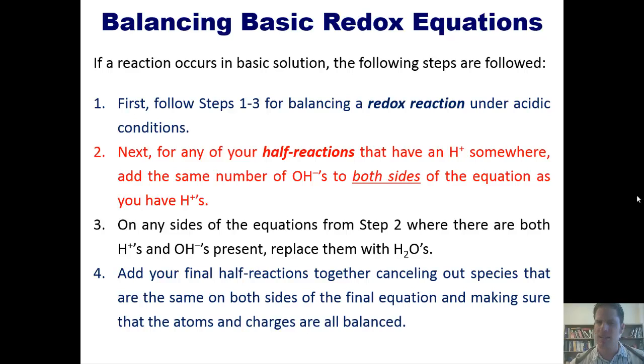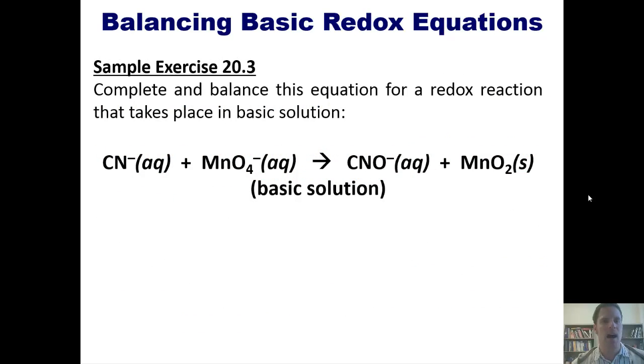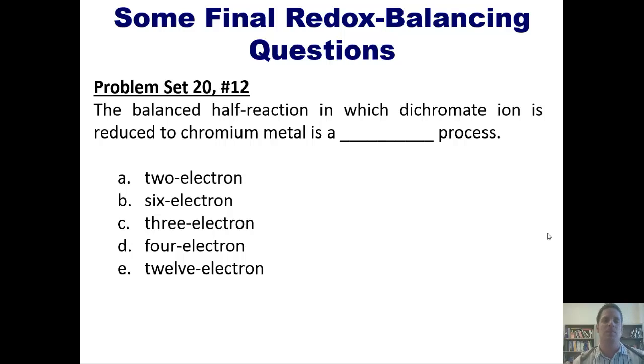All right. Makes sense? Eh, maybe. Let's take a look at an example. I want you to complete and balance the equation for redox reaction that takes place here under basic conditions. Now, of course, I don't expect at this point to be able to do it on your own. Rest assured, I'll do it for you. You can click the link here to a separate video, which I'll show you how to do it on the board. But please watch it and pay attention to how it's done, because the next little questions I'm going to require you to do on your own, starting with this one. The balanced half-reaction in which the dichromate ion is reduced to chromium metal is a blank process. Okay, I guess that's pretty much it for now.